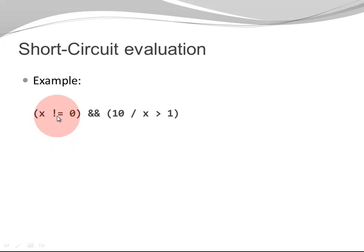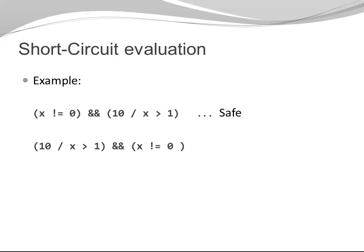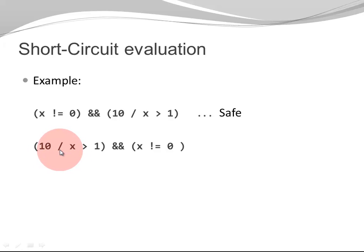Let's look at an example: X != 0 AND 10 / X > 1. This is a nice example of using short circuiting to ensure the denominator X is not 0. If X happens to be 0, then '10 / X' is never executed — so this is safe code. Now let's look at the same statement with the operands switched: '10 / X > 1 AND X != 0'. Here things are very different. If X is 0, dividing 10 by 0 would throw an exception — that code is not safe. The order in which you place your operands makes a difference.